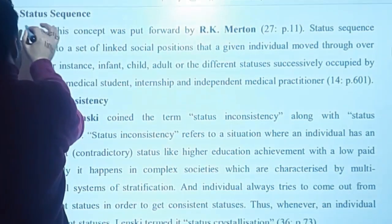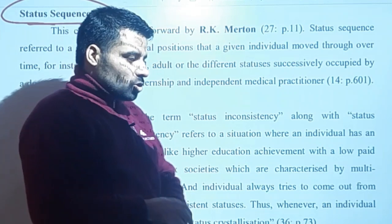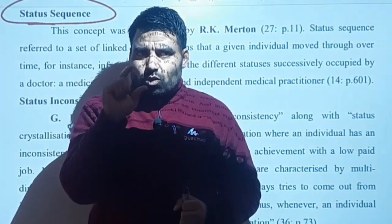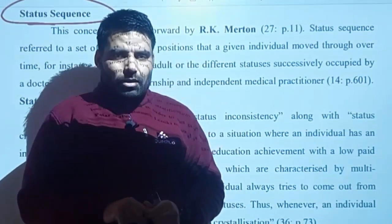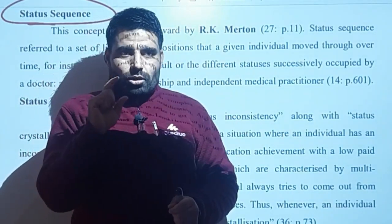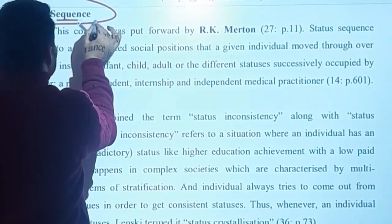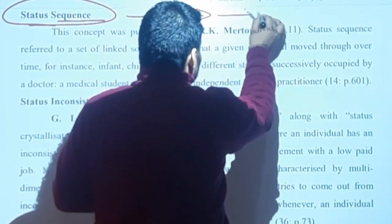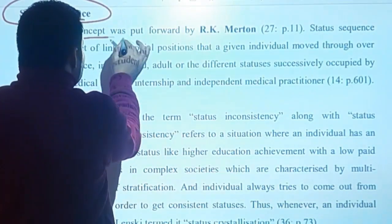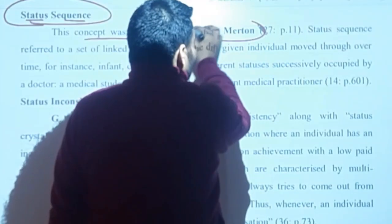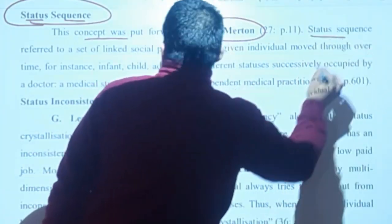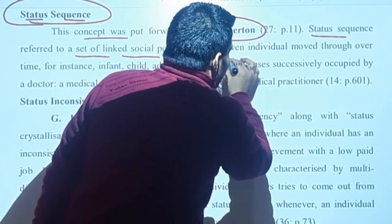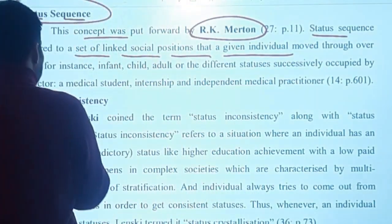Now we have status sequence. What does status sequence mean? Let me give you an example to explain it. Sequence simply means in a systematic manner. Status sequence is a set of linked social positions that an individual moves through over time.